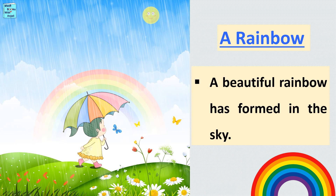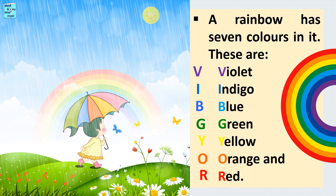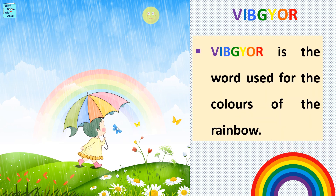A beautiful rainbow has formed in the sky. A rainbow has seven colors in it. These are violet, indigo, blue, green, yellow, orange, and red. VIBGYOR is the word used for the colors of the rainbow.